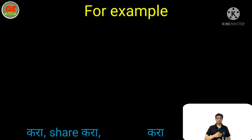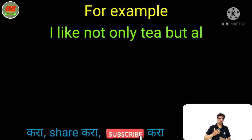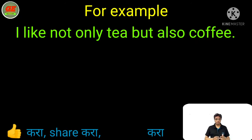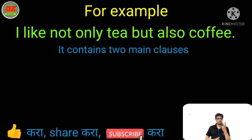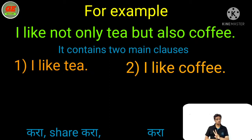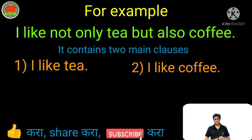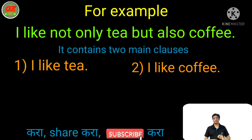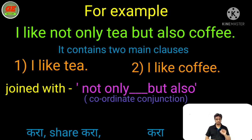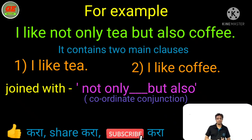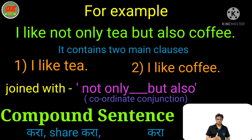For example: 'I not only like tea but also coffee.' Just focus on this sentence carefully. Into that sentence, two main clauses are available. Number one: 'I like tea,' and number two: 'I like coffee' — each with their own subject and predicate. These two main clauses are joined with the coordinate conjunction 'not only but also.' That's why this sentence is known as a compound sentence.